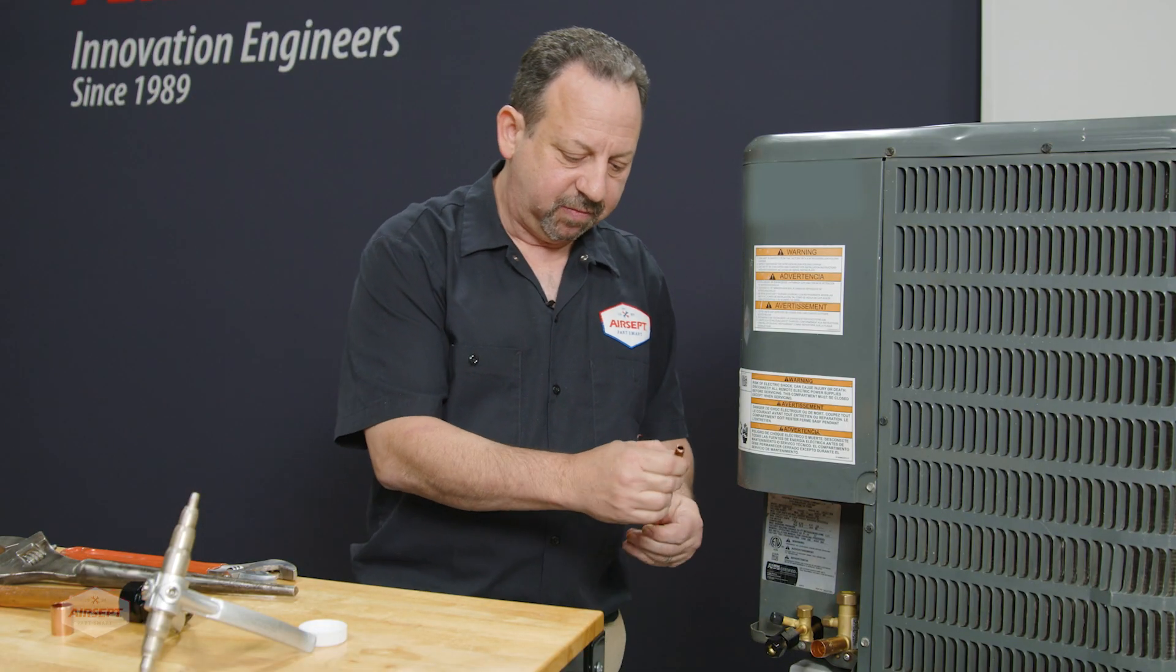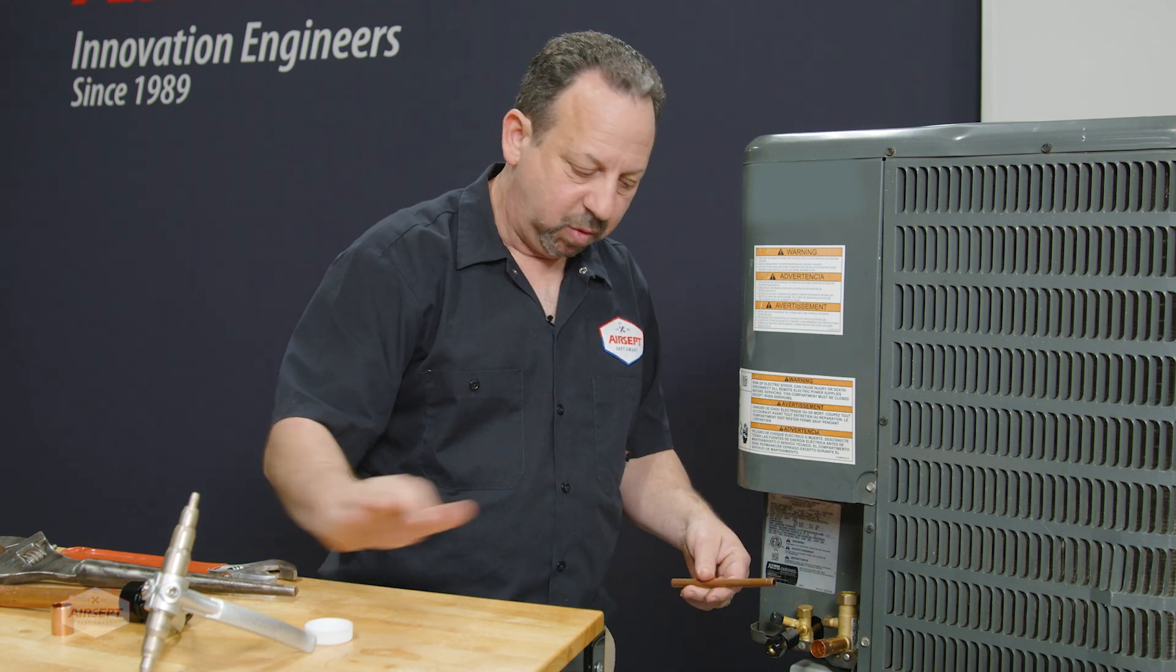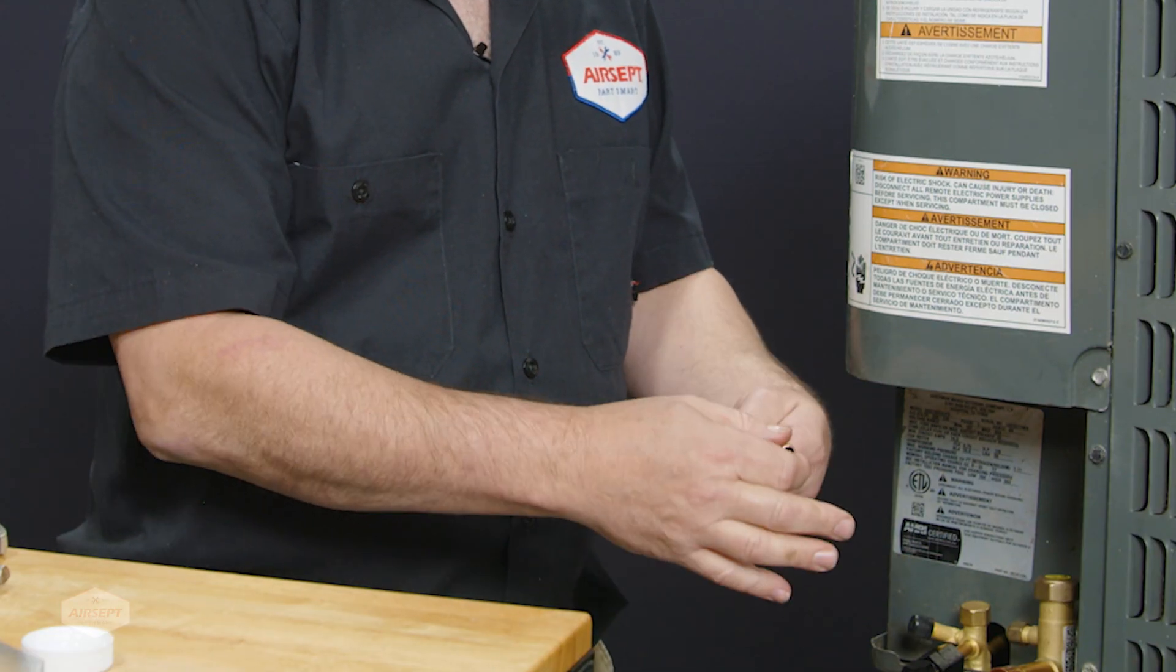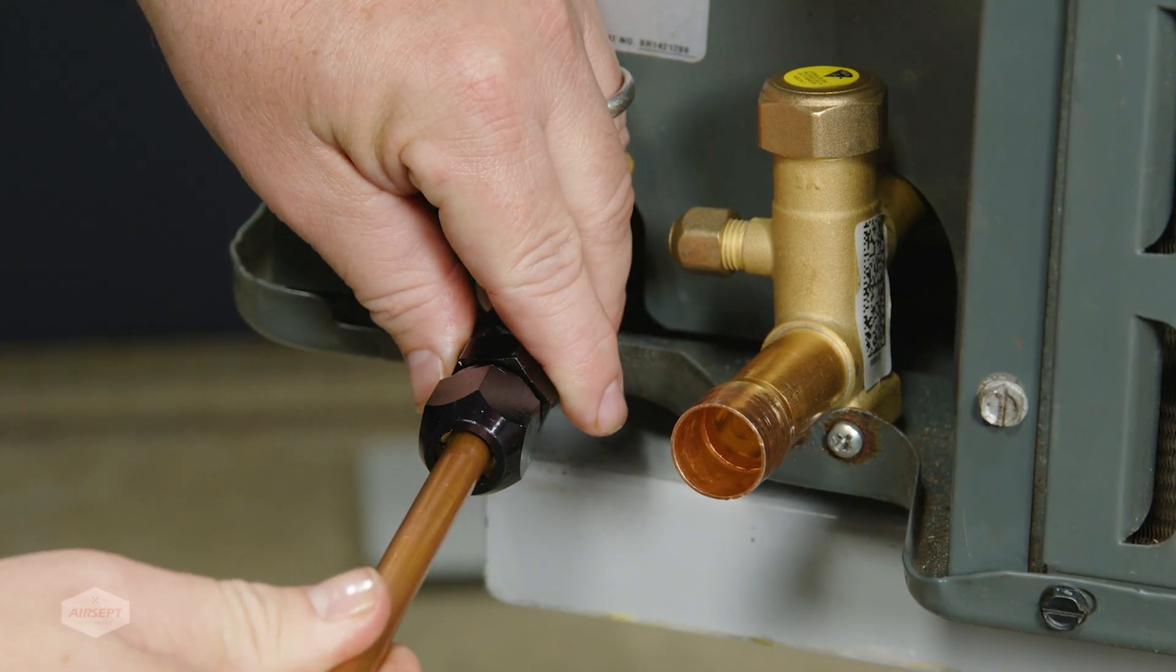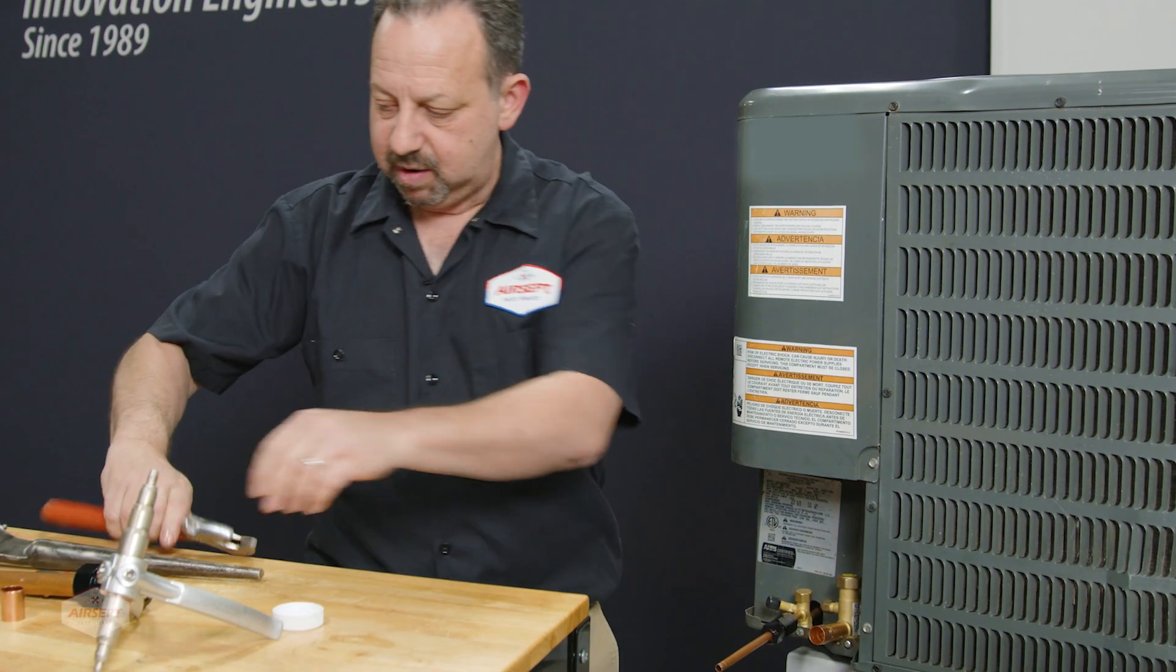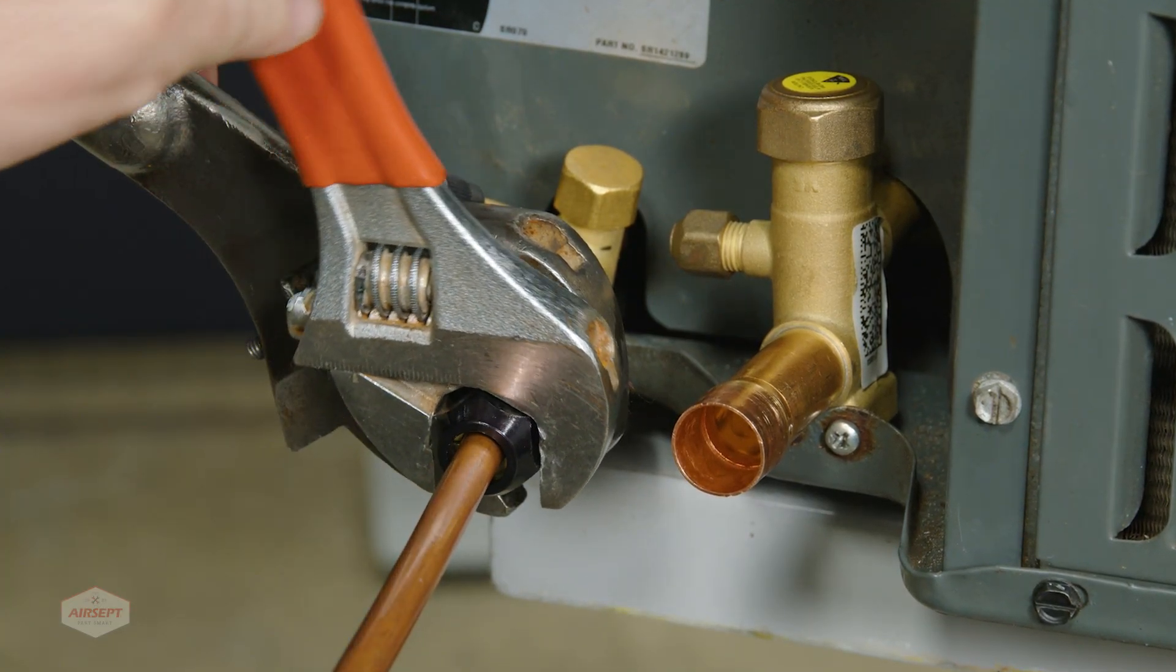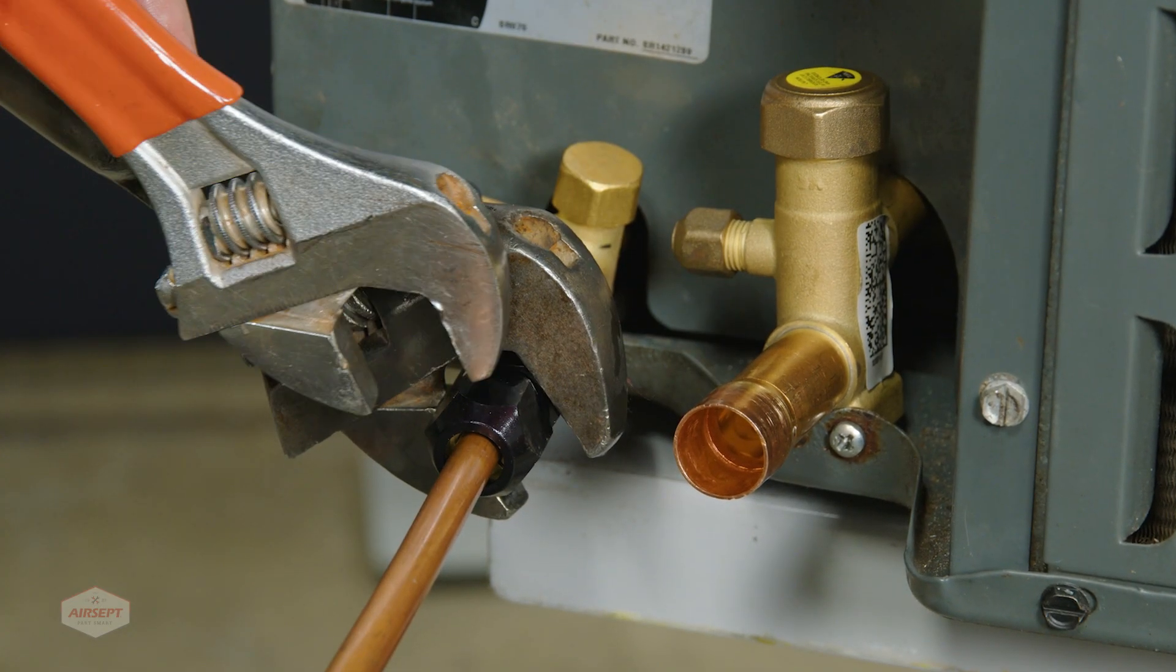The line side is very simple. Once again, we want to make sure we oil the line. Insert the line. Hand tighten as much as you can. Take your wrenches and finish tightening until the nut and the body meet and it stops.